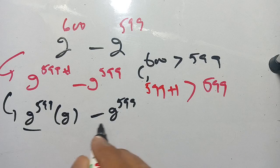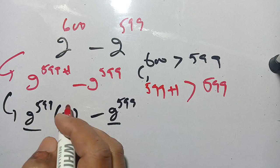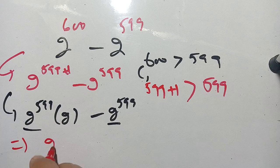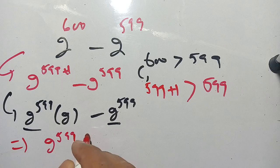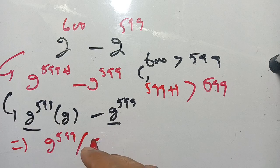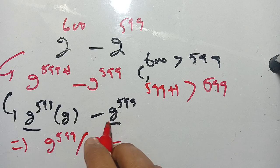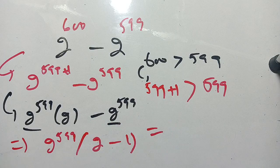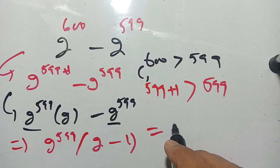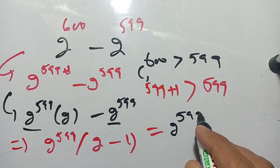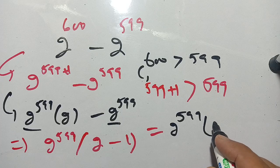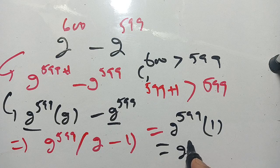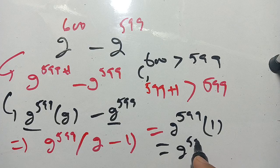From these terms we take out 2 raised to power 599. We get 2 raised to power 599 times, with only 2 remaining here and minus 1 remaining here. Now we get 2 raised to power 599 times (2 minus 1), which becomes 1. It is equal to 2 raised to power 599.